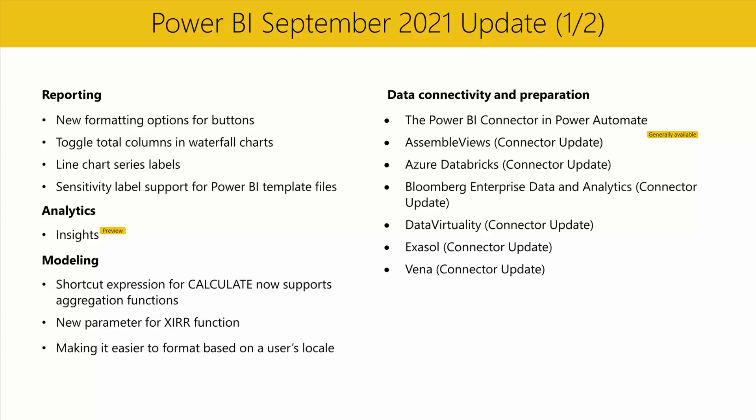Next, we've made it easier to use the FORMAT function to format a value to text based on a user's locale by including it as a new parameter. For example, a datetime in the English Great Britain locale will return a string where the day precedes the month and the time is written in a 24-hour format, while a datetime in the English United States locale will return a string where the month precedes the day and the time is written in a 12-hour format. Jaron will show us a demo of these improvements.